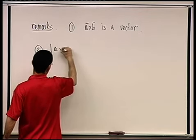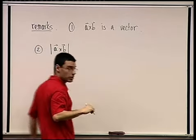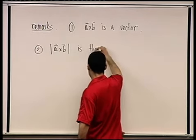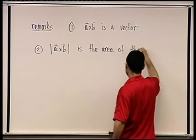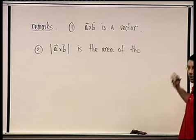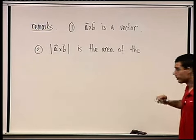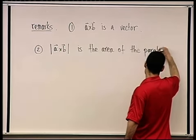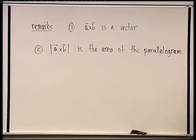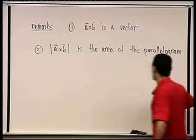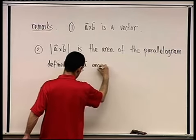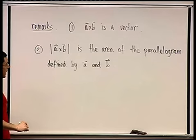Remark two: the length of A cross B has a geometric interpretation. The length of this vector is the area of the parallelogram which A and B define. Let's show why that is true.